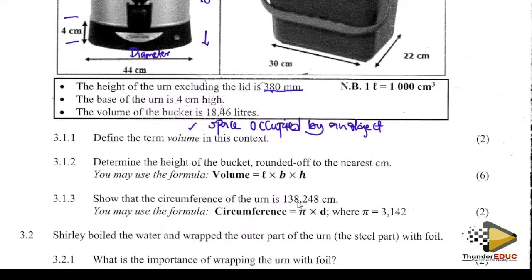Volume and capacity are two different things. If you get a box and put it in a corner — how much space does it take? That is what volume is. Capacity is how much that box can hold. The space inside the box is capacity; how much space the box takes up is volume.